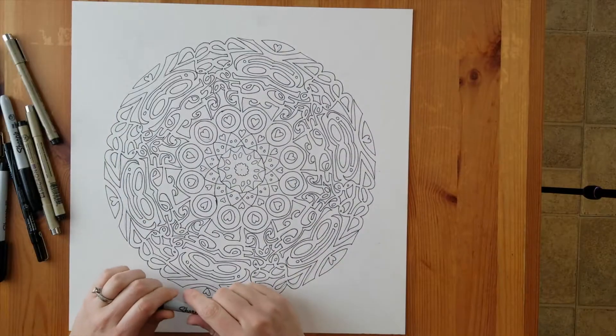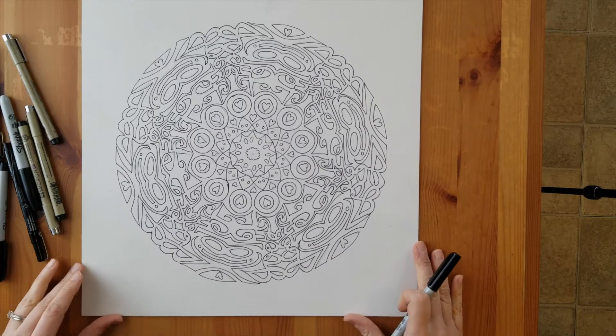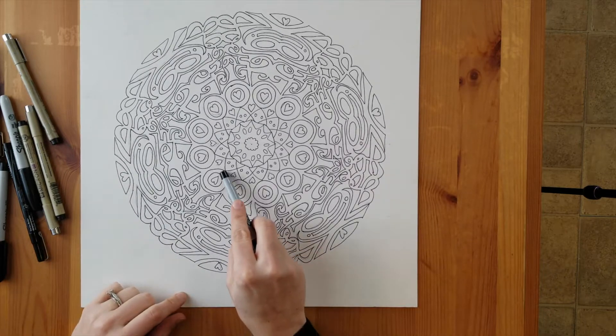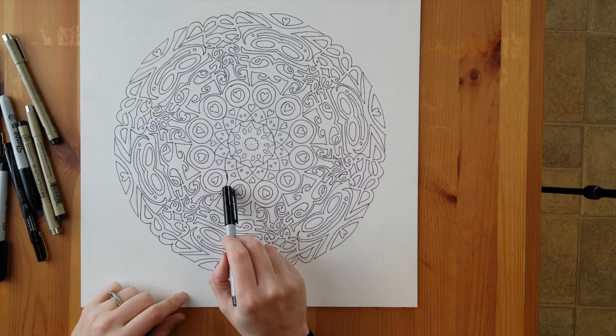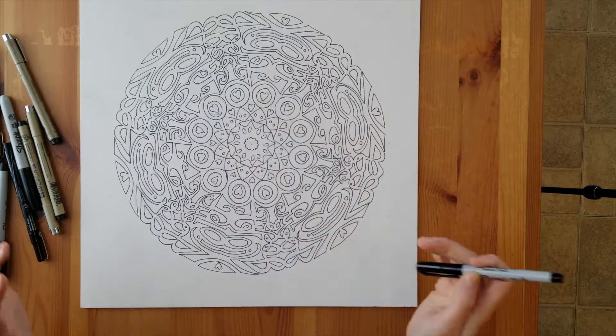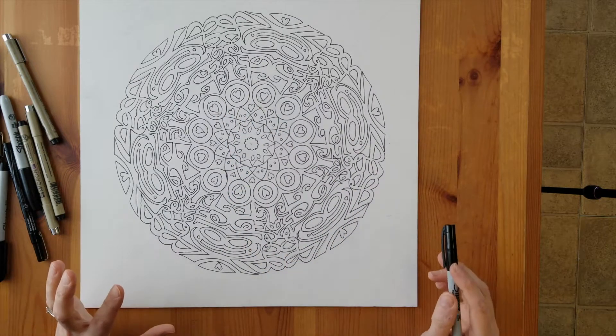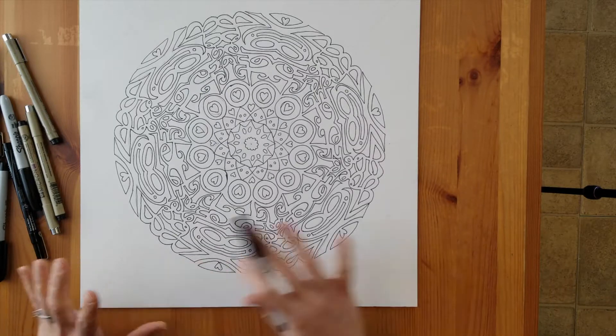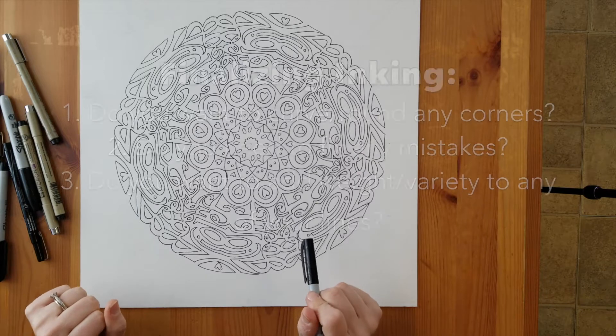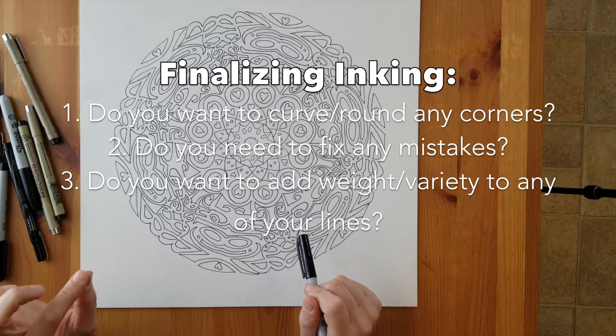Another thing that you can do is round some of your corners, and there might be some areas where, like in mine, I kind of had a little mishap here with my line. It's not quite perfect, it kind of goes on the other side, another little mistake here and here. So once you've done some erasing, I want you to look really closely at your lines. I want you to ask yourself two things: do you want to curve anything, do you want to fix anything?